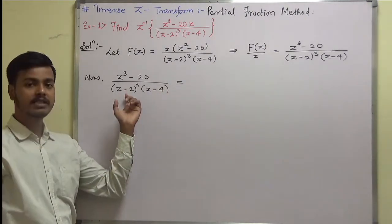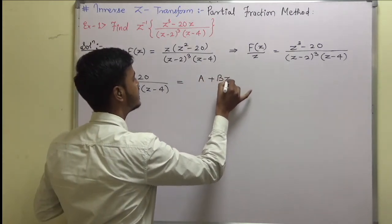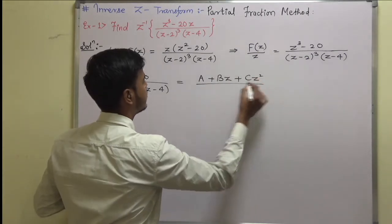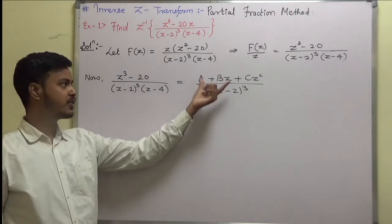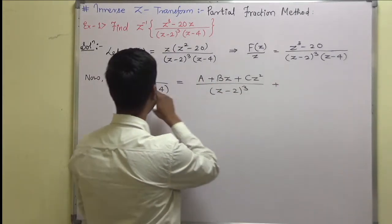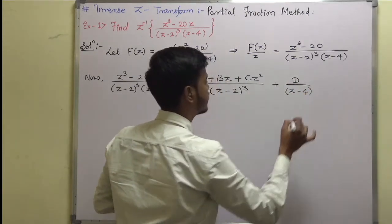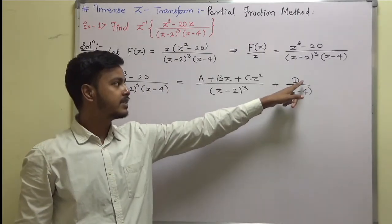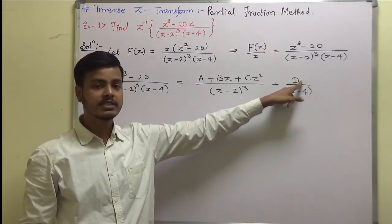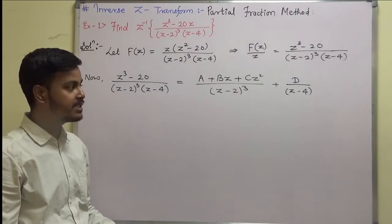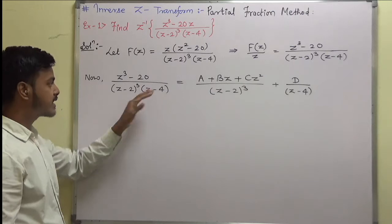So we can write (z² - 20) upon (z - 2)³ into (z - 4) as (a + bz + cz²) upon (z - 2)³ — because there is a cube factor — plus d upon (z - 4), since that is a linear factor. Now, as far as finding the unknowns a, b, c, d, I can find d easily by putting z = 4 in the left-hand side excluding this factor.